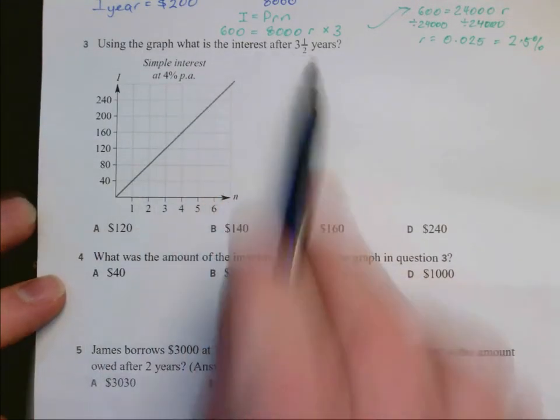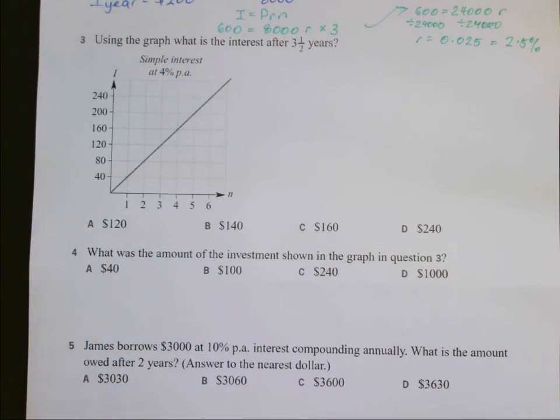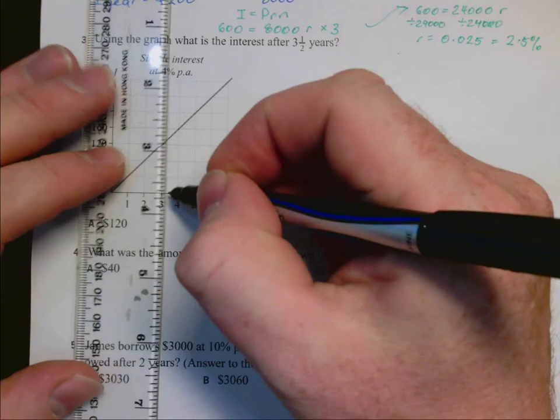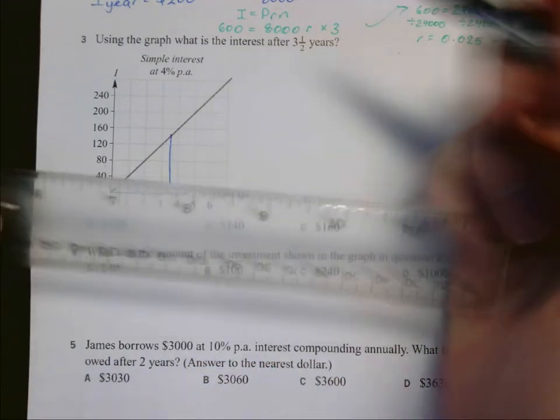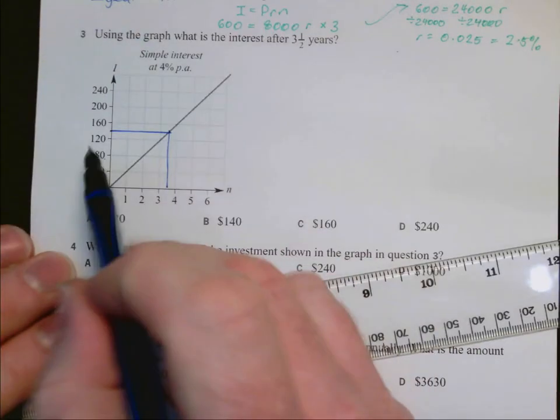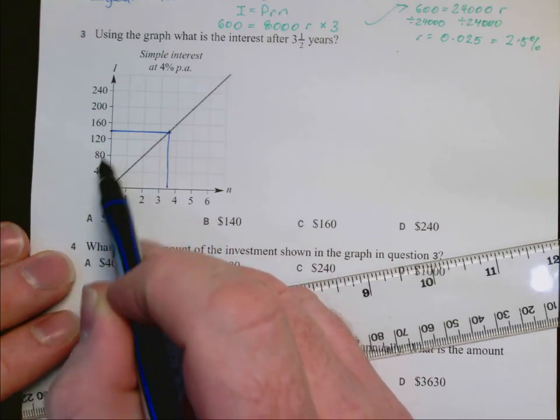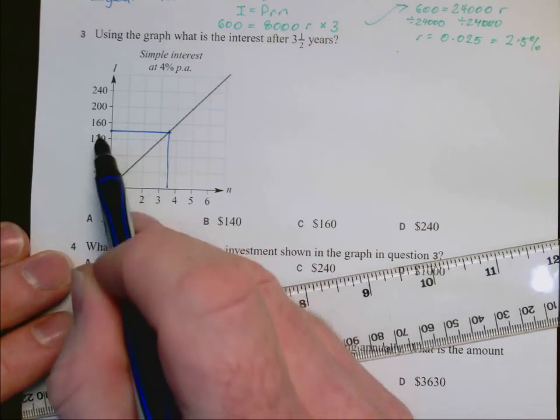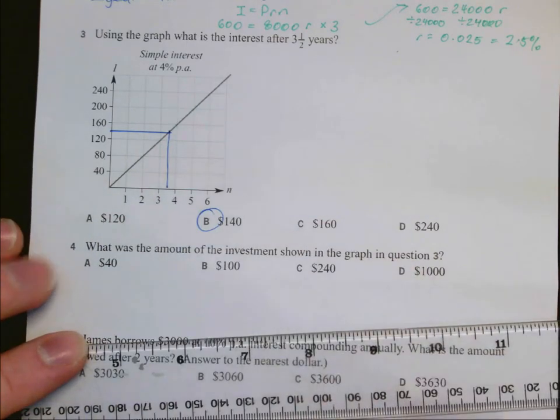In question 3, using the graph, what is the interest after three and a half years? Three and a half is here, so we go up, and when we get to the line, we come across. We're halfway between 120 and 140. The scale's going up by 40 each time, so halfway up is 20. That means we are at 140.